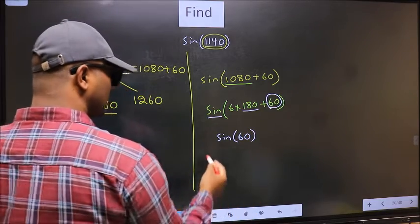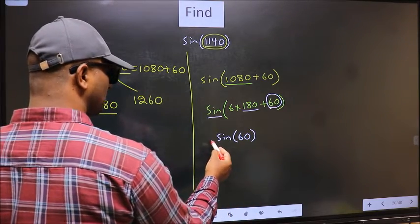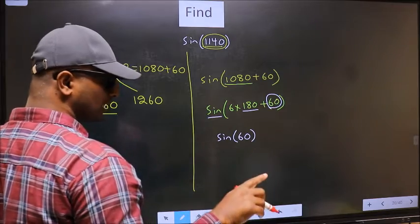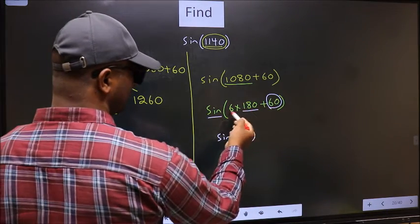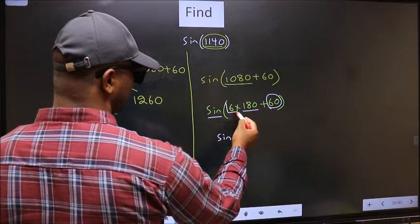Now the question is, will we get here plus or minus? To answer that, we should look at the number before 180. That is 6.